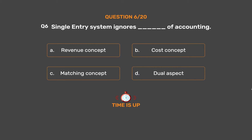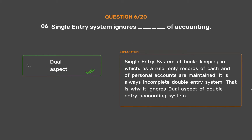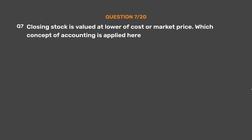The correct answer is Option D: Dual Aspect. The single entry system of bookkeeping, as a rule, only records cash and personal accounts. It is always an incomplete double entry system. That is why it ignores the dual aspect of the double entry accounting system.